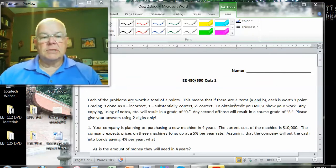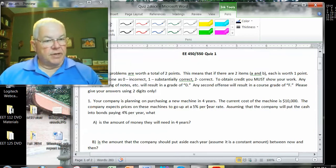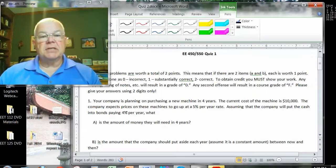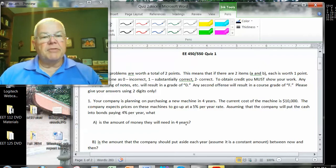So let's look at the first problem here in quiz two. The first problem says company's going to purchase a machine in four years. So this is going to be a sinking fund or capital recovery. The current cost of machines is $10,000. The company expects price on these machines go up 5% per year. Company will put the cash into bonds, but they only make 4% a year on the bonds.